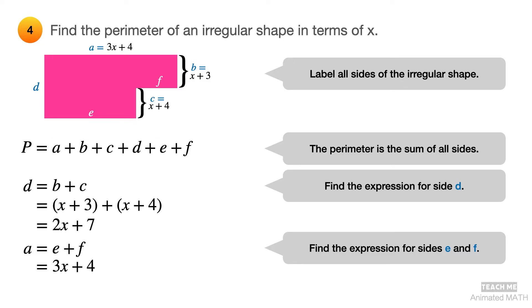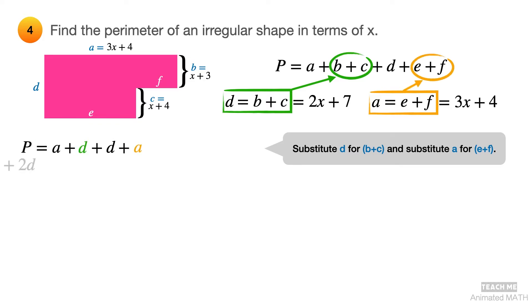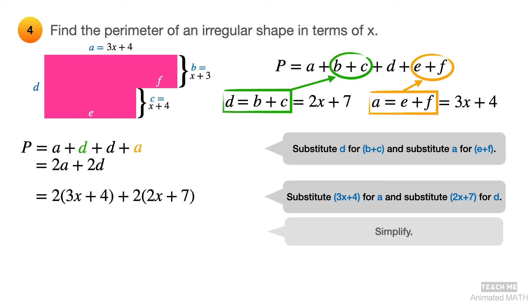Now that we have algebraic expressions for sides D, E, and F, we can now work on finding the perimeter in terms of x. Substitute D for B plus C and substitute A for E plus F. Substitute 3x plus 4 for A and substitute 2x plus 7 for D. Continue simplifying the equation using polynomial addition by combining like terms. And the final answer is 10x plus 22.